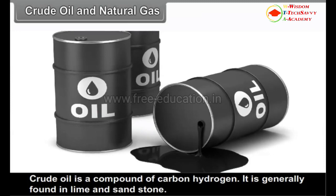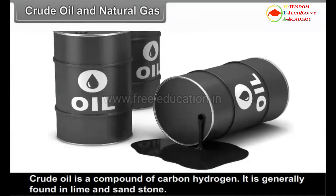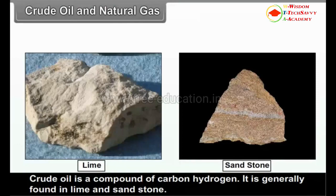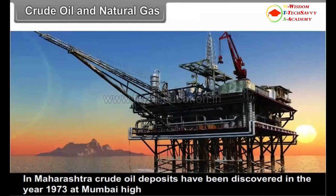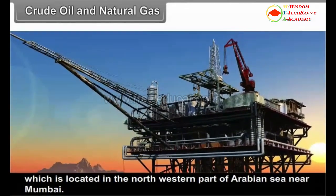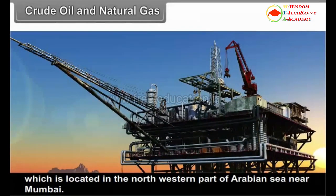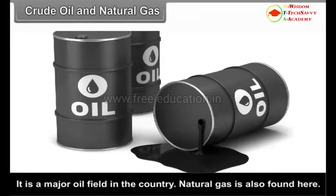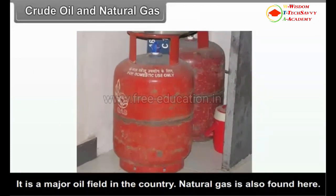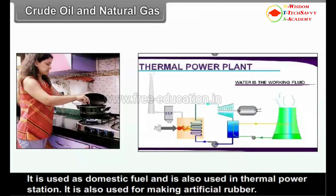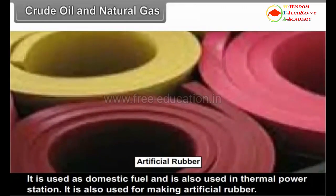Crude Oil and Natural Gas. Crude oil is a compound of carbon and hydrogen, generally found in limestone and sandstone. In Maharashtra, crude oil deposits were discovered in 1973 at Mumbai High, located in the north-western part of the Arabian Sea near Mumbai, and it is a major oil field in the country. Natural gas is also found here. It is used as domestic fuel, in thermal power stations, and for making artificial rubber.